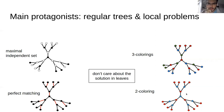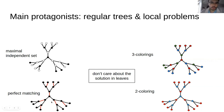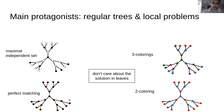One thing to make clear: in my definition of local problems, we will not care about how the solution looks on leaves. For example, in perfect matching you could say there is no solution if the number of nodes is odd. But I don't want to study these global arguments, so I will say I don't care about whether leaves are matched or not.